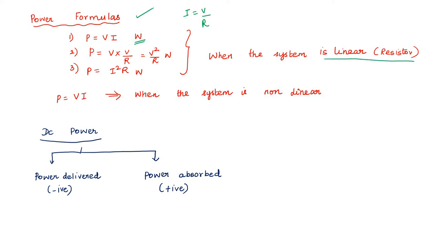For a non-linear system, which power formula is applicable? That is P = V × I only, because Ohm's law is applicable for linear devices and is not applicable for non-linear devices. So P = VI is used when the system is non-linear.